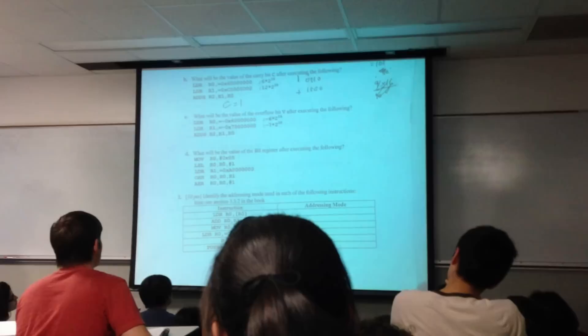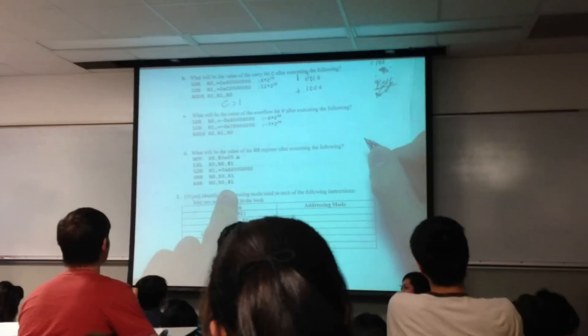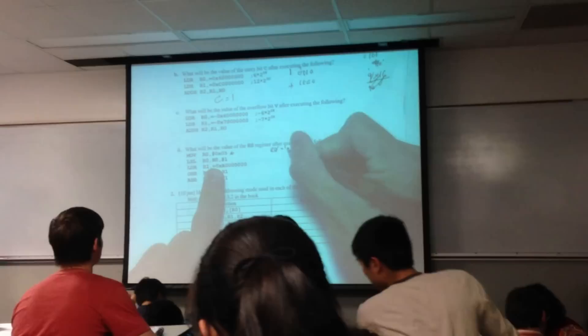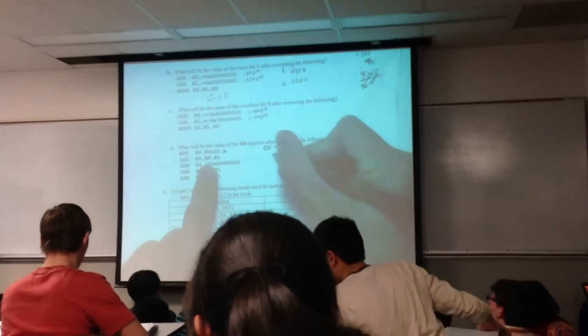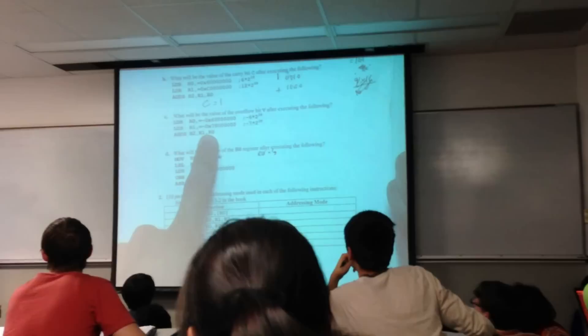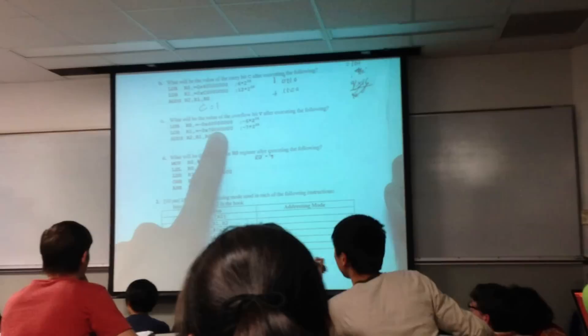So what is the value of the R0 register after executing the following? So what happens first? Alright, okay. So R0 equals 5. What is LSL? Left shift. So I left shift by 1. So if this is a hex 5, what does it become? On C, wouldn't that be just negative 13, which would be D?